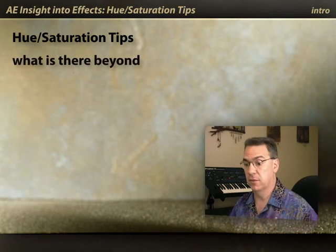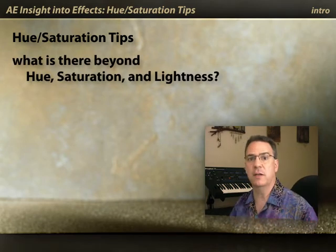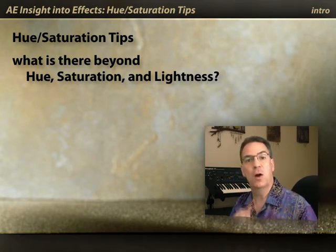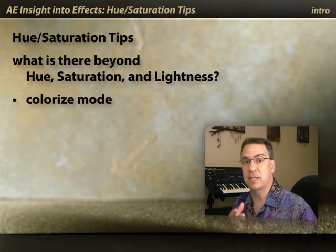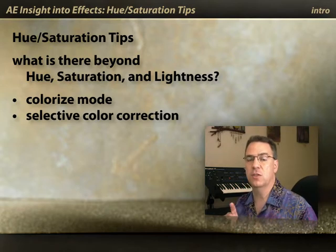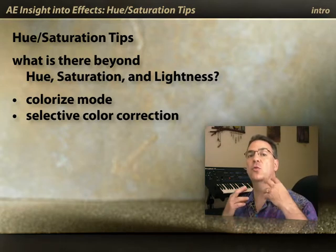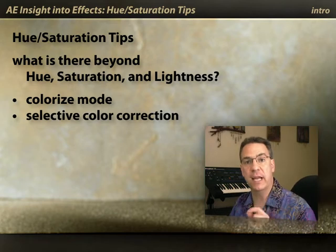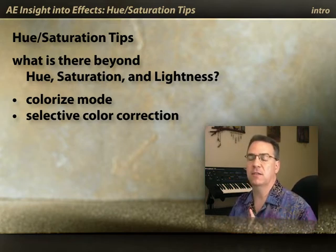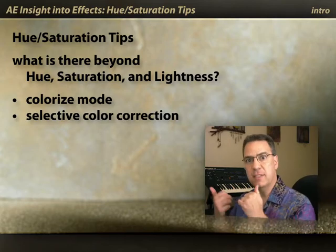Hue Saturation may seem like one of the most obvious effects in After Effects — it adjusts the hue, saturation, and lightness of a layer. However, there are two additional uses you may not have been aware of. One, you can use it to colorize an image, give it a color or tint. Secondly, you can select a specific range of colors to adjust, rather than the whole image — selective color correction. It's also not the most obvious thing to keyframe; I'll show you that as well. So let's dive in.